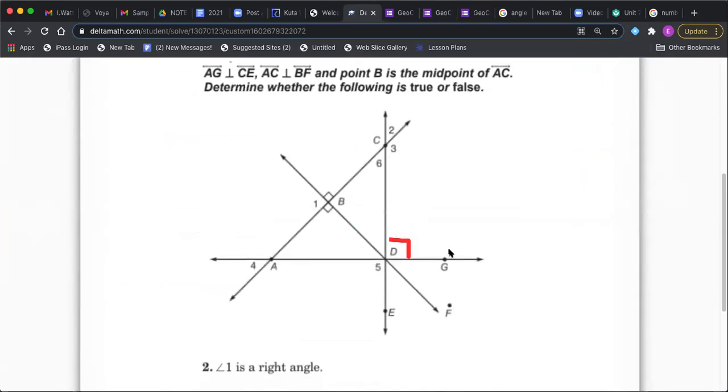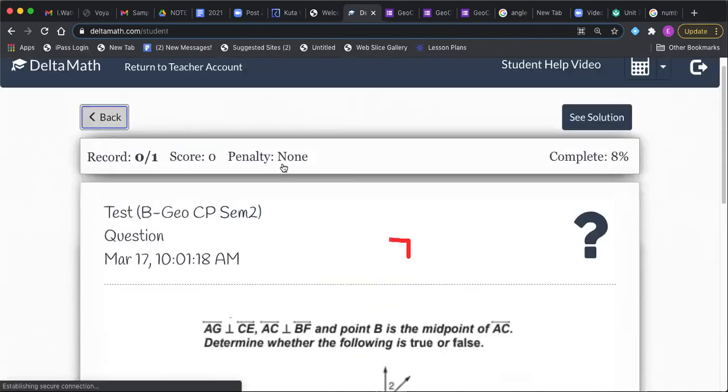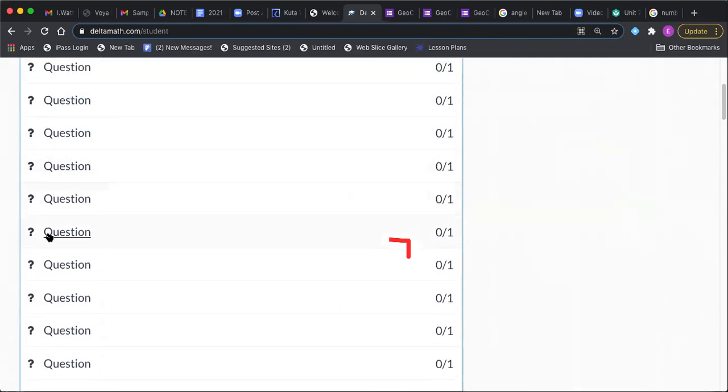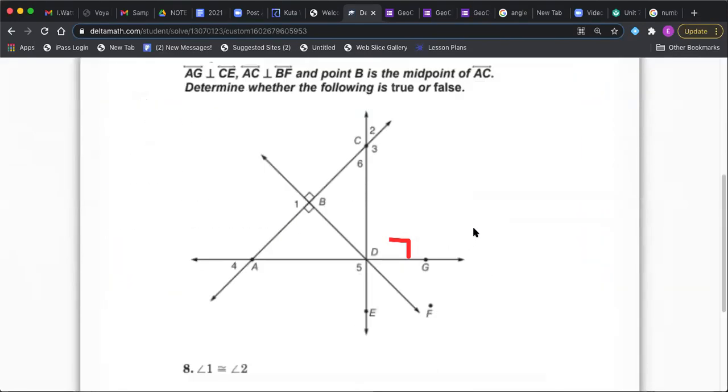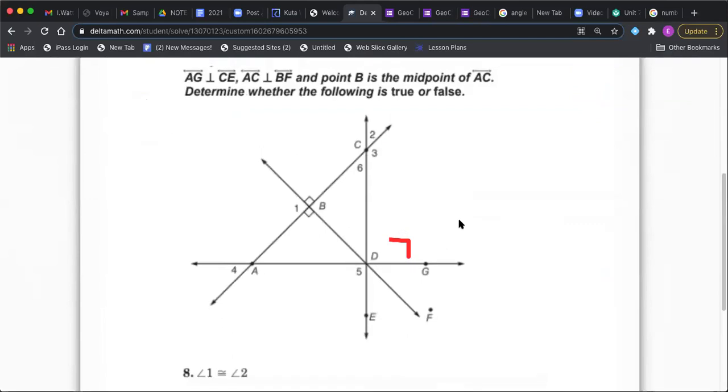Let's try the next one here. So you'll see it's the same diagram and it's the same directions up top. So I still know this angle that I knew was 90 before, it's still 90. So you don't have to reread everything. It's the same diagram. What am I trying to find this time? Angle one is a right angle. I think we just talked about that.